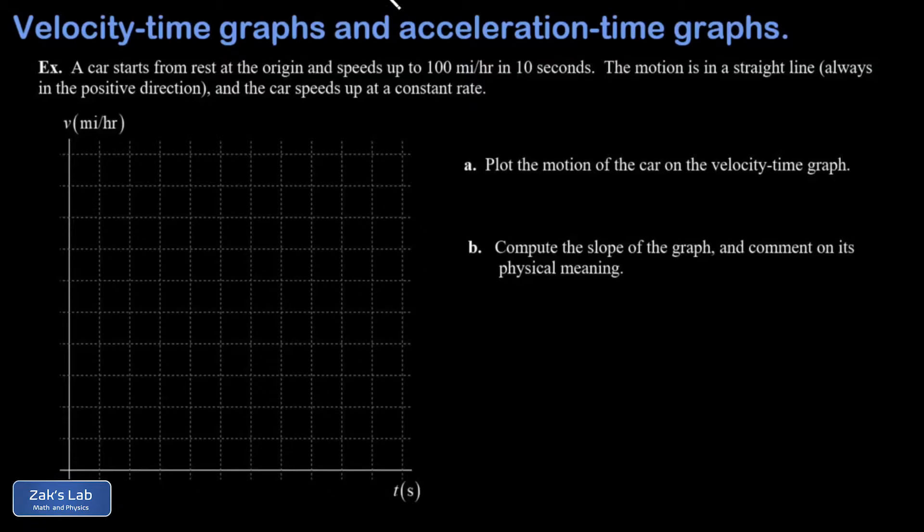So in our example, we're told that a car speeds up from rest, starting from the origin, and gets to 100 miles per hour in 10 seconds. The motion is always in a straight line, and the car speeds up at a constant rate. So in Part A, we want to plot the motion of the car on a velocity-time graph.